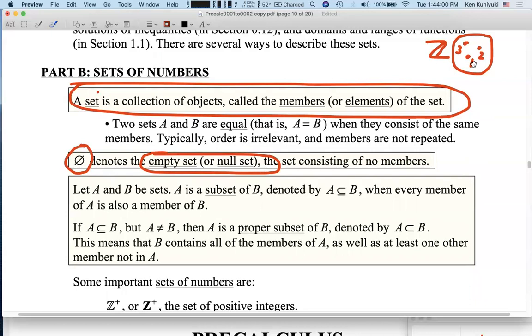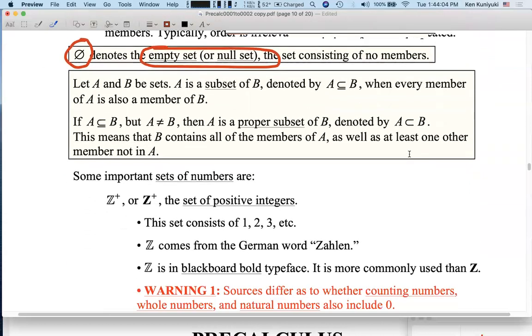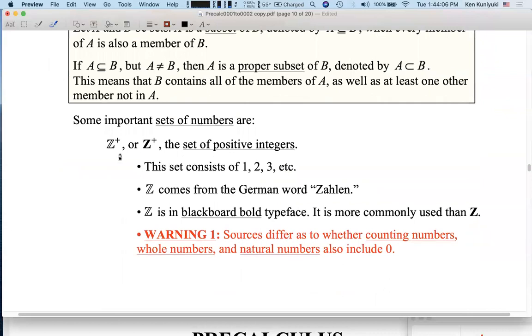1, 2, 3, 4, and so forth. There are elements of Z, but there are also elements of Z plus, more precisely. By the way, we write Z either boldface or with a double bar that's referred to as blackboard bold.